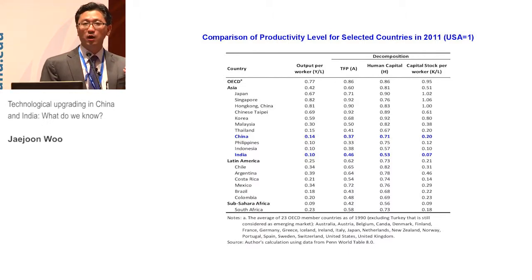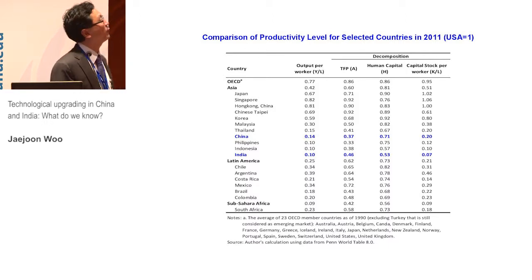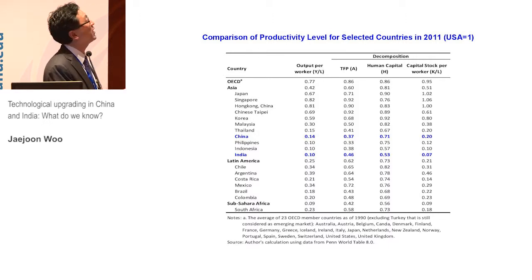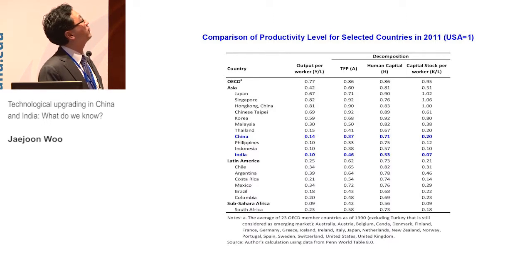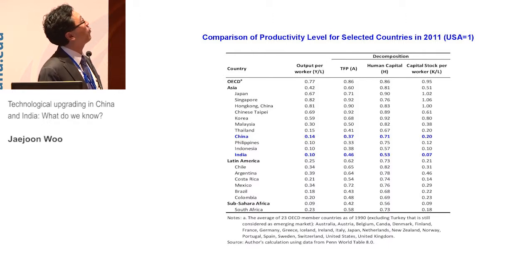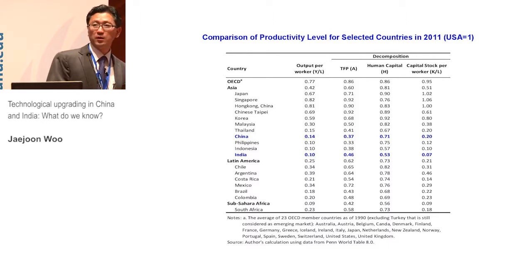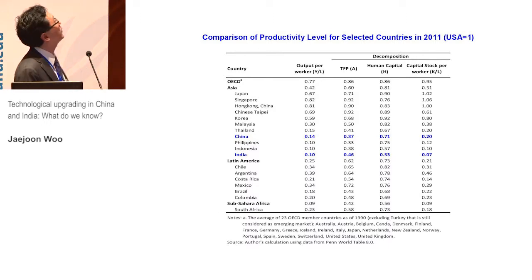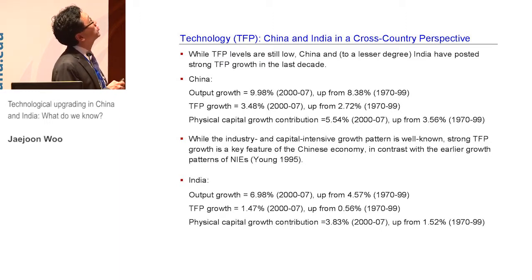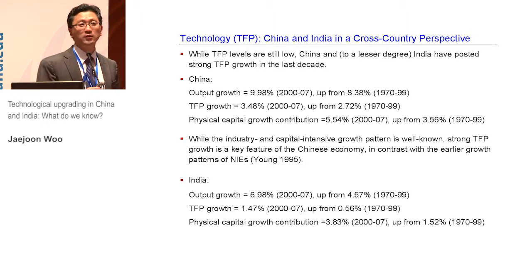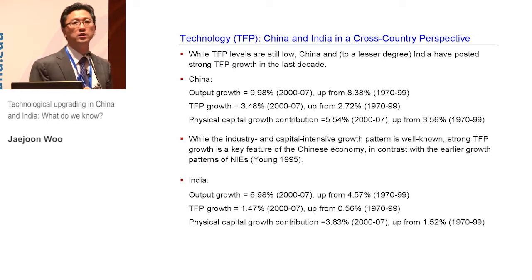Interestingly, unlike our perceptions about capital-intensive growth in China, capital deepening in terms of capital stock per worker is very low — only about 20% of US levels for China and 7% for India. So there is a huge scope for catching up in TFP level, capital stock per worker, and labor productivity. But despite these low levels, China especially, and to a lesser degree India, have experienced quite strong TFP growth.